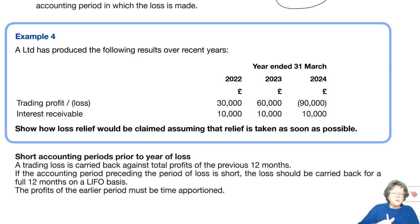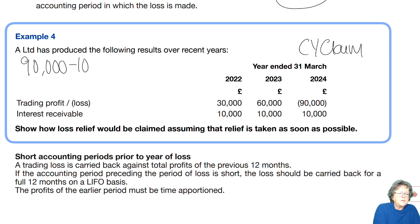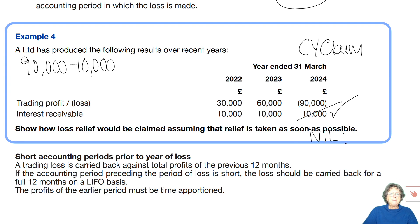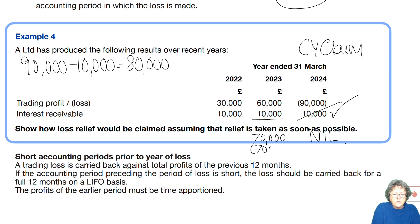We can do a current year claim. Set up the pro forma and set up the loss memorandum with the £90,000. A current year claim means we've used £10,000 of it to do a current year claim — we've wiped that out and we pay no tax. Which means we have £80,000 left. We have to do a current year claim in order to be able to do a carry-back claim. If we carried it back, we could utilise £70,000 of it to bring that down to nil. So in our loss memorandum, we have £10 left.